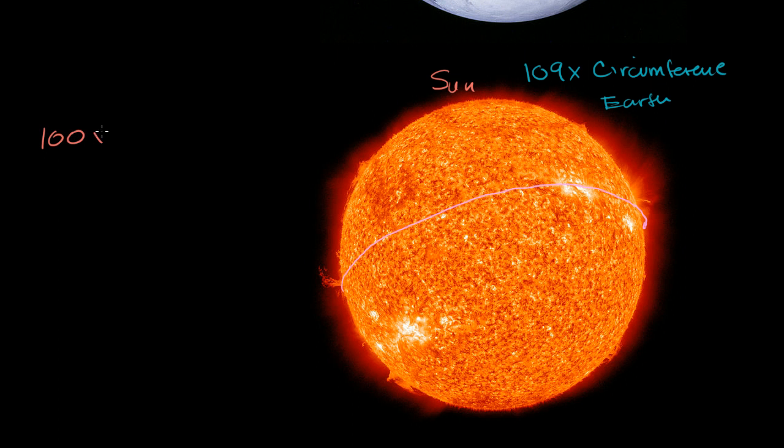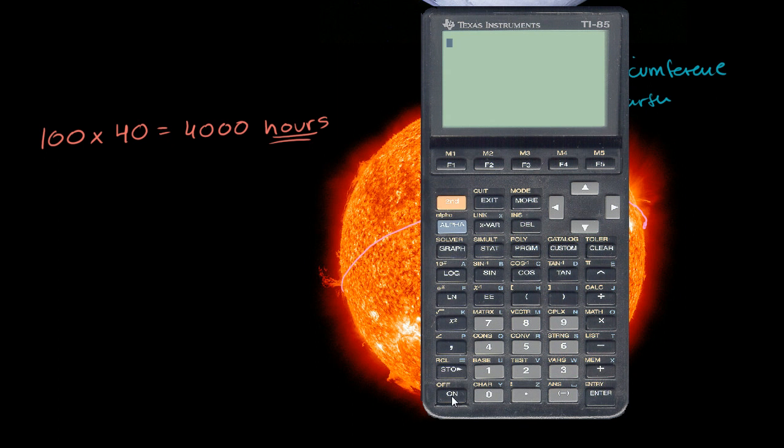So it would be 100 times, I could do 109, but just for approximate, it's roughly 100 times the circumference of the Earth. So 109 times 40 is equal to 4,000 hours. And just to get a sense of what 4,000 is, actually since I have the calculator out, let's do the exact calculation. It's 109 times the circumference of the Earth times 40 hours.